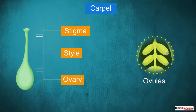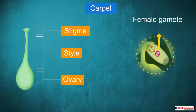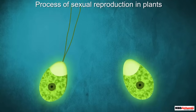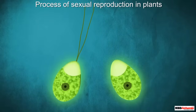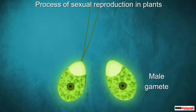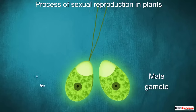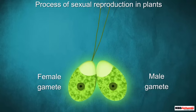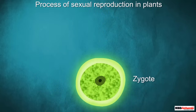It is the ovule that has the female gamete called the egg cell. For sexual reproduction to take place, a male gamete is to be fused with the female gamete, thereby forming a zygote.